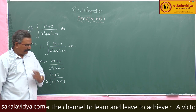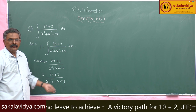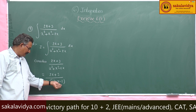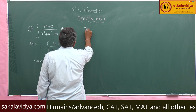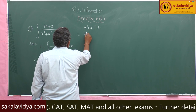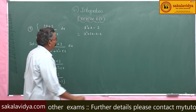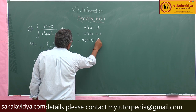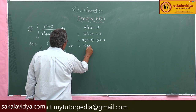Let us verify whether x² + x - 2 can be factored. Check b² - 4ac — yes, it can be factored. So, factors of x² + x - 2: we split as x² + 2x - x - 2, take x common to get x(x+2) - 1(x+2). So the factors are (x + 2)(x - 1).